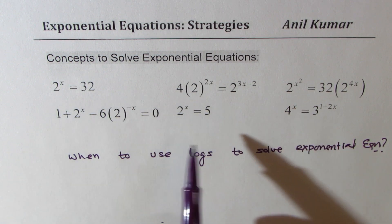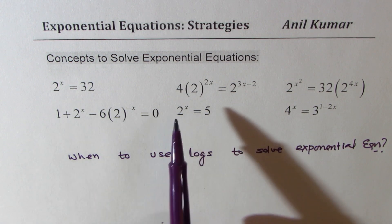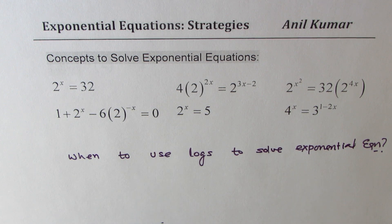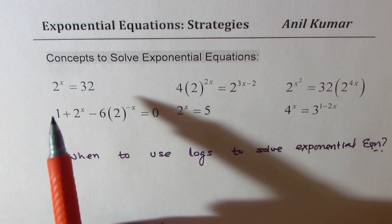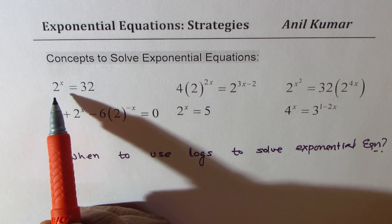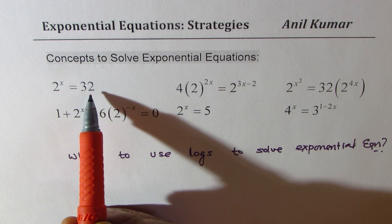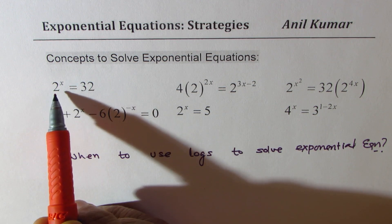For that I have taken six examples here. We will see the solution of each one of them. You can always pause the video, copy these questions, answer them, and then look into my suggestions. You will notice that in the first example, we have 2 to the power of x and 32. We can always write 32 in the form of a power of 2.